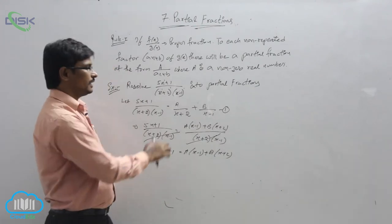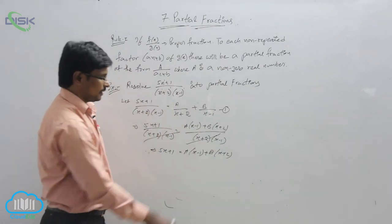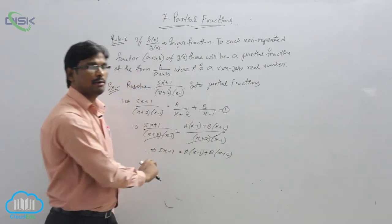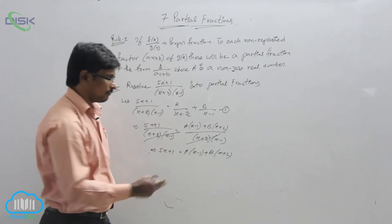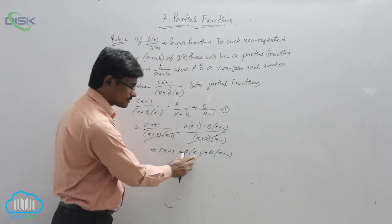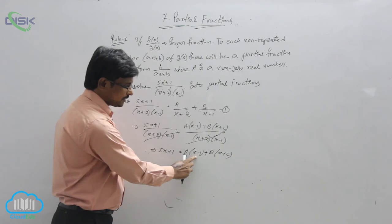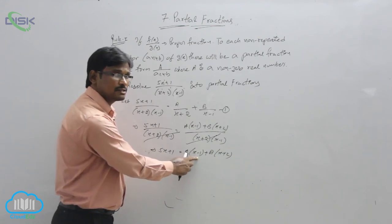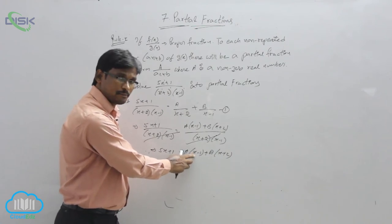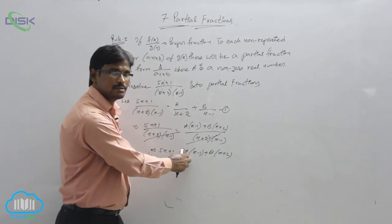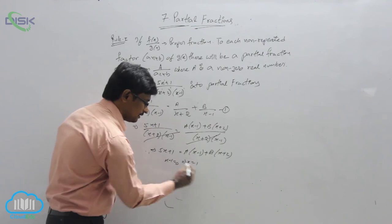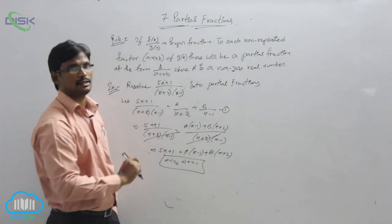Our target is to find the values of A and B. We can use two methods: one is to multiply out and compare corresponding coefficients, and the other is the substitution method, which is easier. Here we have the term (x - 1), so for what value of x does it become 0? If x = 1, then (x - 1) = 0. So we substitute x = 1.